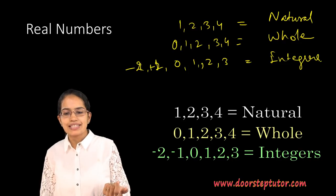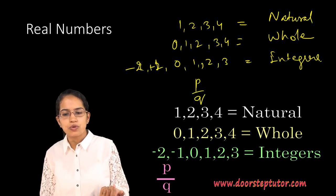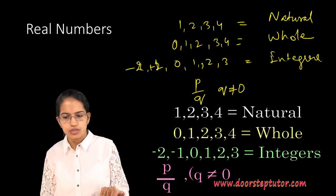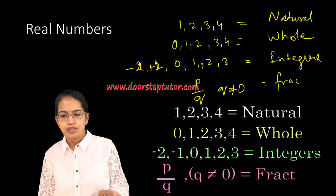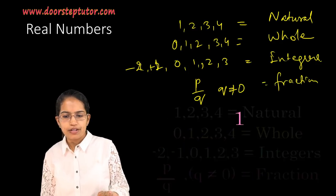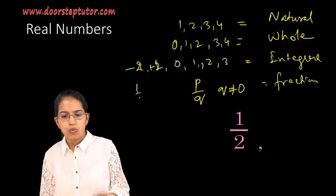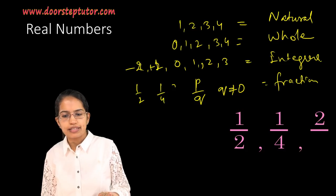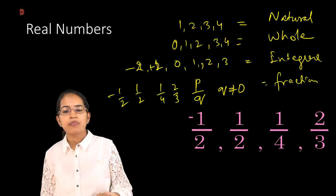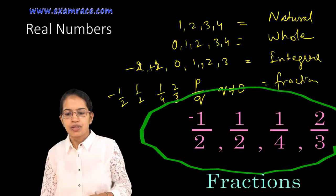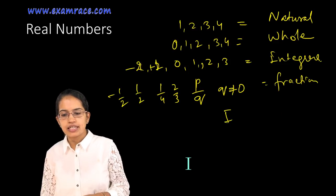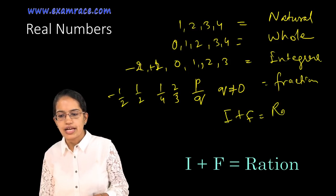When I say any number in the form P over Q where Q is not equal to 0, that is a fraction — for example, 1/2, 1/4, 2/3, minus 1/2. These are all fractions. Integers and fractions together are what are known as rational numbers.